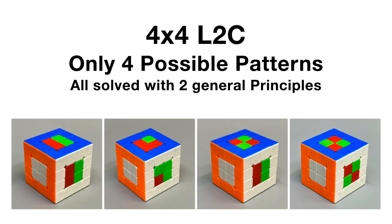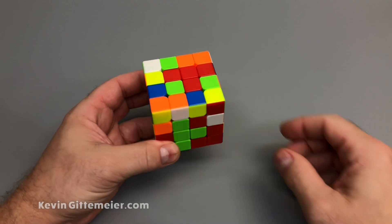When we get to the last two centers, there are only four possible patterns, and we will use two general principles to solve all of them logically.